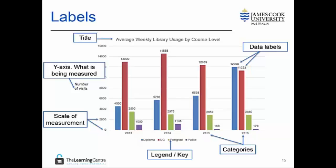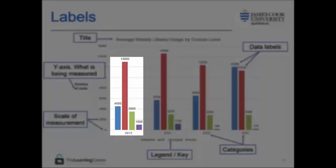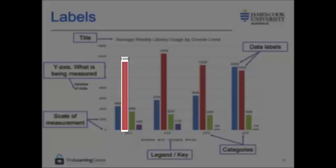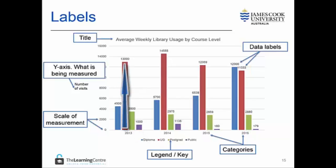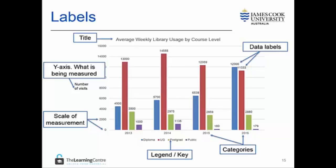In this graph we focus on one year on the x-axis and then one of the groups within that year. From the legend we can see that these are diploma students in blue, undergraduate students in red, postgraduate students in green and members of the public in purple. We read directly up the column we want to focus on until we reach the top, then read straight across to the left and read the y-axis label. In this graph data labels have been included at the top of each column for ease of use.